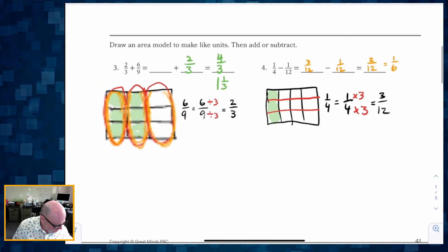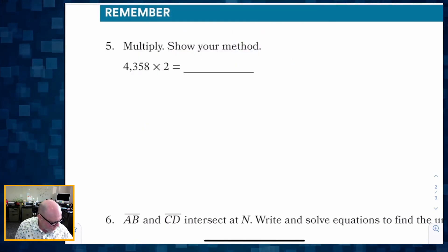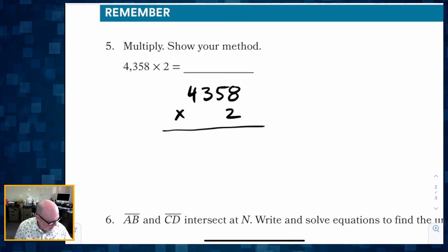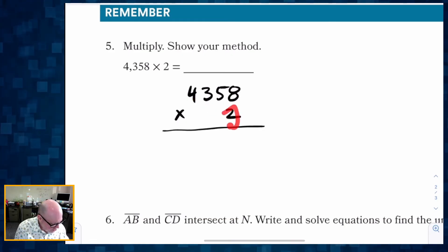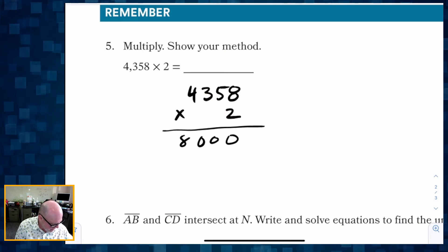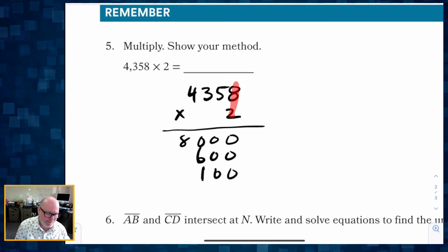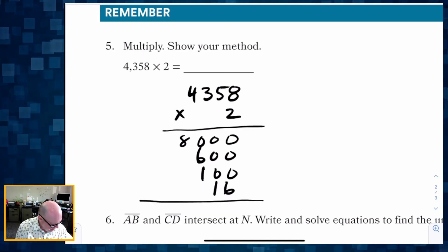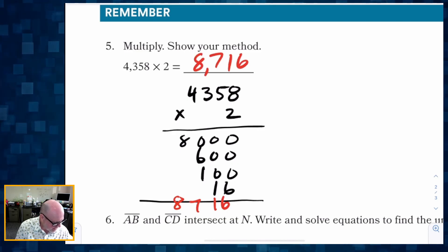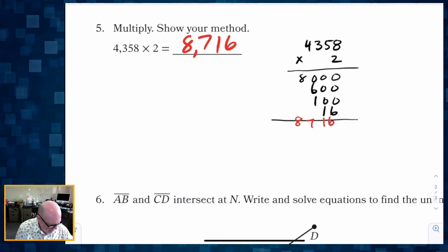Now let's do a multiplication problem using partial products. We multiply by two using partial products: two times four thousand is eight thousand; two times three hundred is six hundred; two times fifty is one hundred; two times eight is sixteen. Adding those together: eight thousand plus six hundred plus one hundred plus sixteen gives us eight thousand seven hundred sixteen. That's the answer using the partial products method.